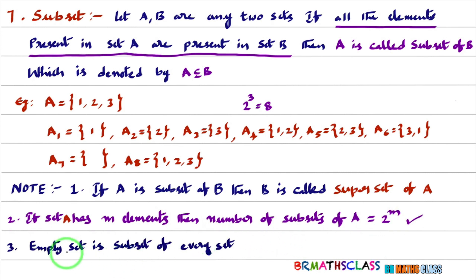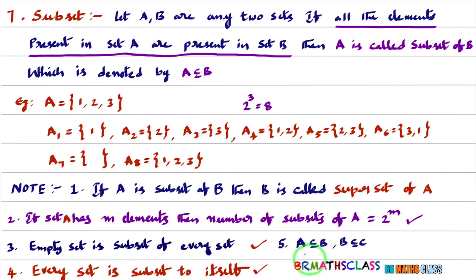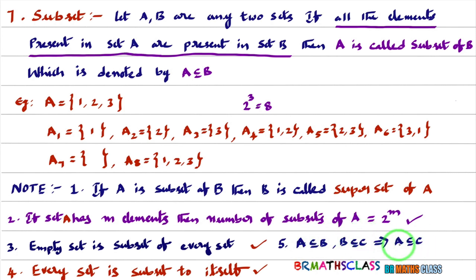Third point: empty set is a subset of every set — please keep this in mind. Next point: every set is a subset of itself. These two points you need to remember: empty set is a subset of every set, and every set is a subset of itself. Last note: if A is a subset of B and B is a subset of C, then we can directly write A is a subset of C.